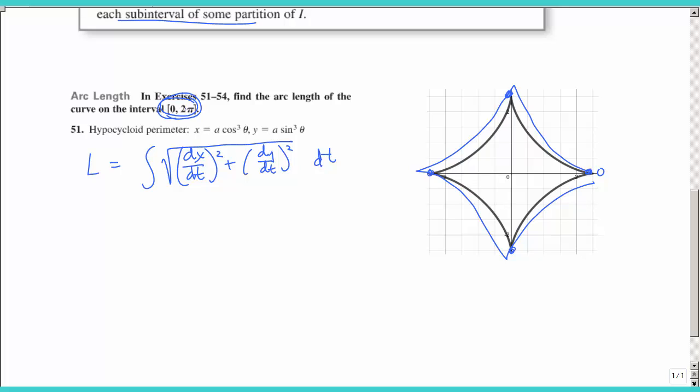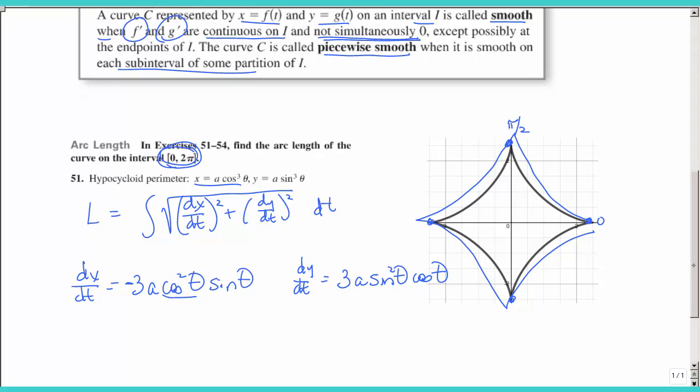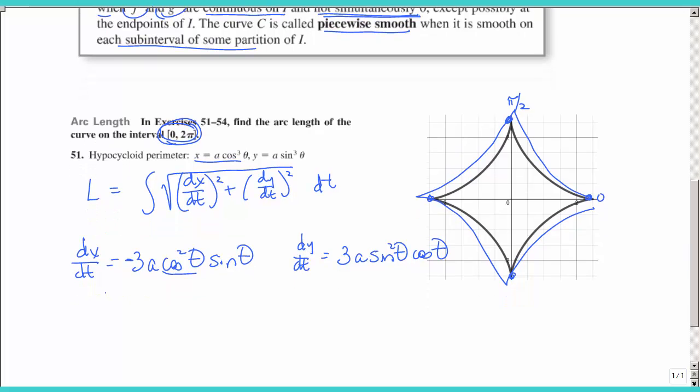dx dt, dy dt, would these two derivatives be simultaneously zero anywhere along zero to two pi? Well, let's see, at pi over two, what would be that derivative? So if I evaluate dx dt at pi over two, I would get,